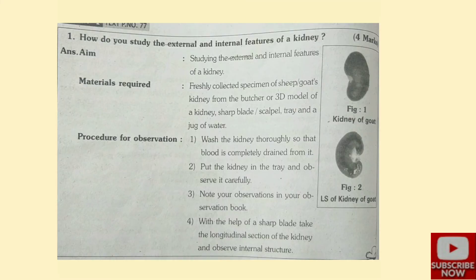Out of these 14 points, you can write any 10 to 12. Question 12: what materials and procedure have you used to find out the internal features of a kidney? Materials required: freshly collected specimen of sheep's or goat's kidney from the butcher or a 3D model, a sharp blade or scalpel, a tray, and a jug of water. Procedure: first, wash the kidney thoroughly so that blood is completely drained.